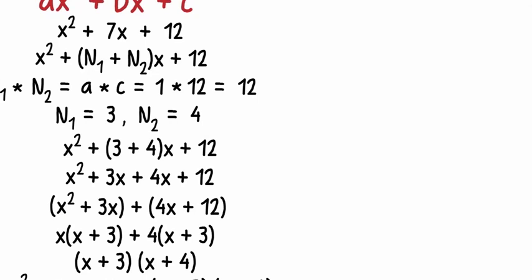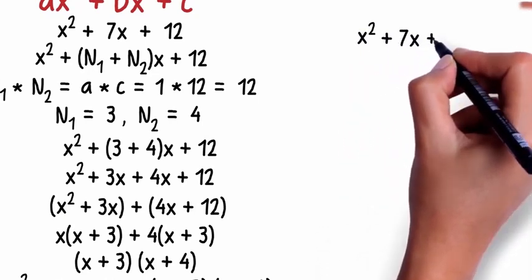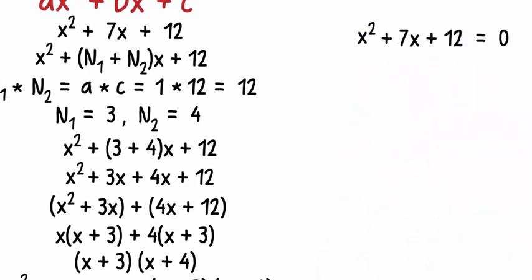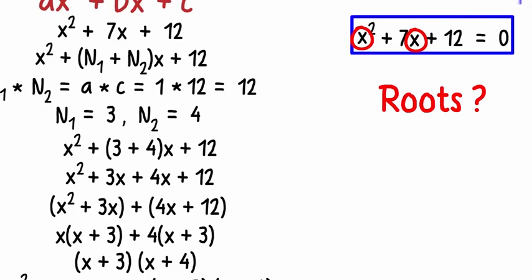If you understood this concept of factorizing polynomials, then finding the roots of quadratic equations is very easy. Now assume that the quadratic equation we have is x² + 7x + 12 = 0.